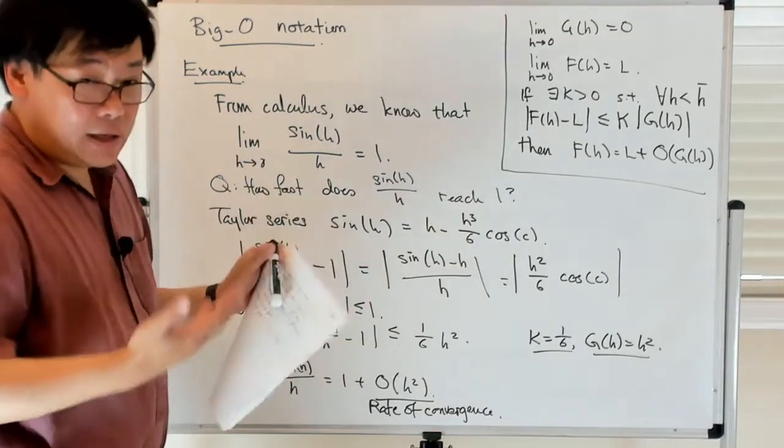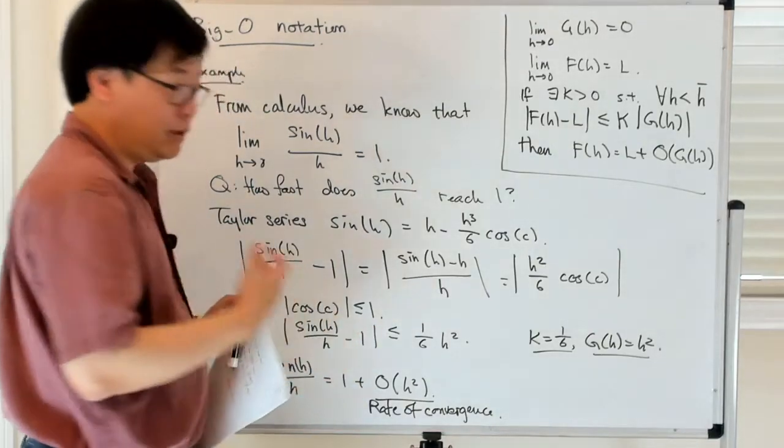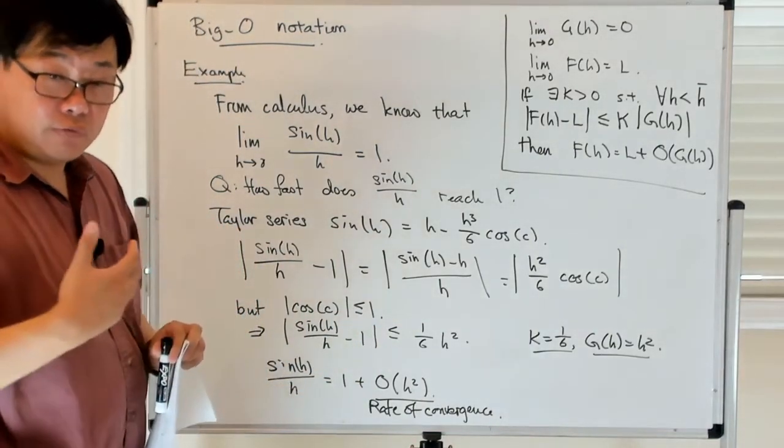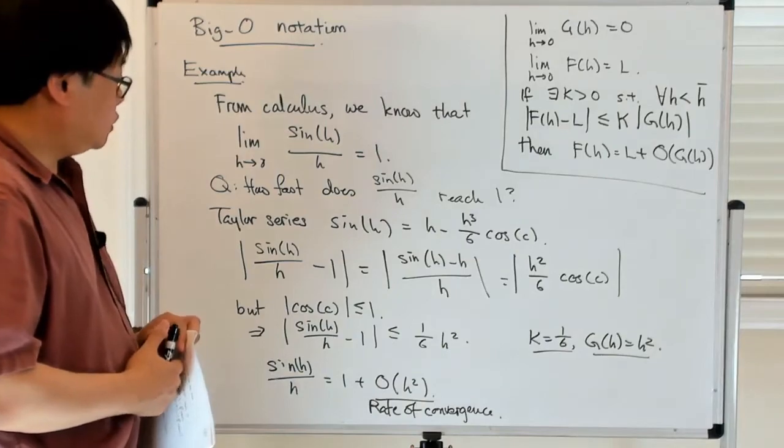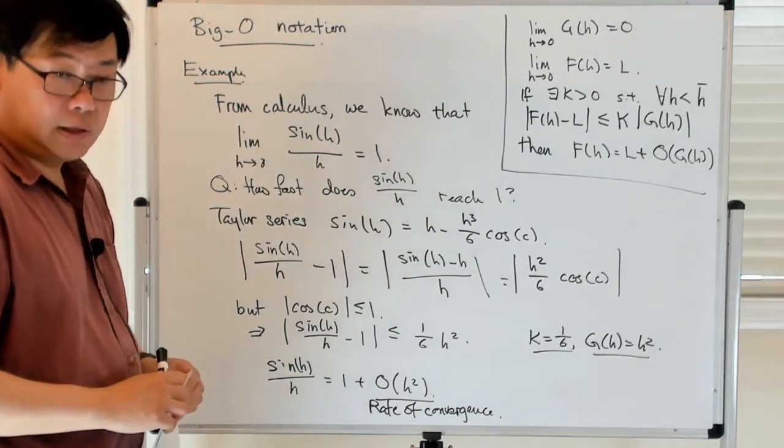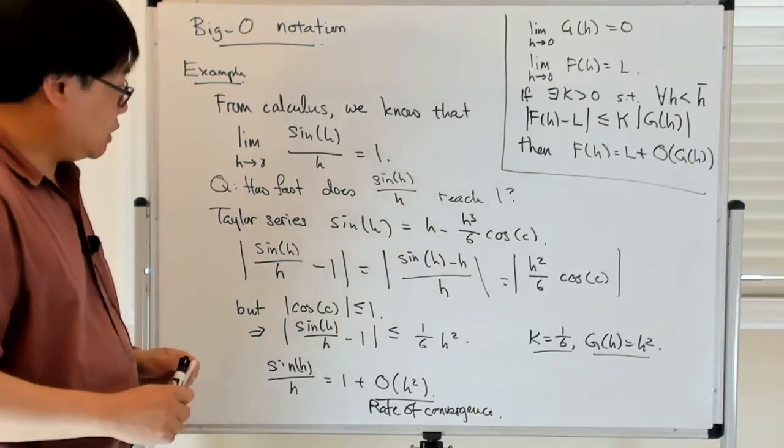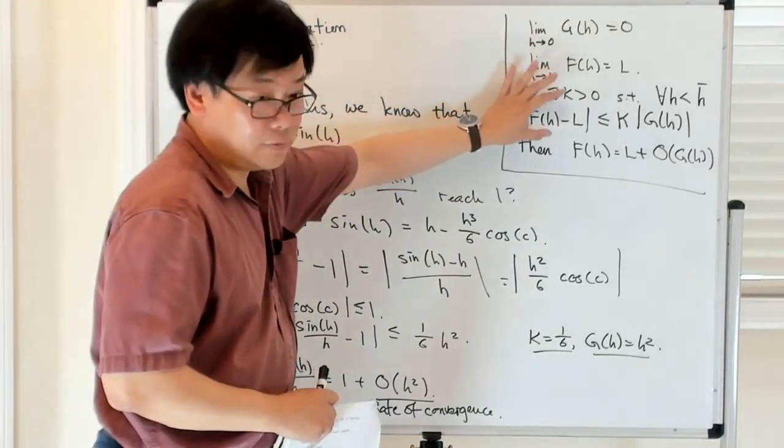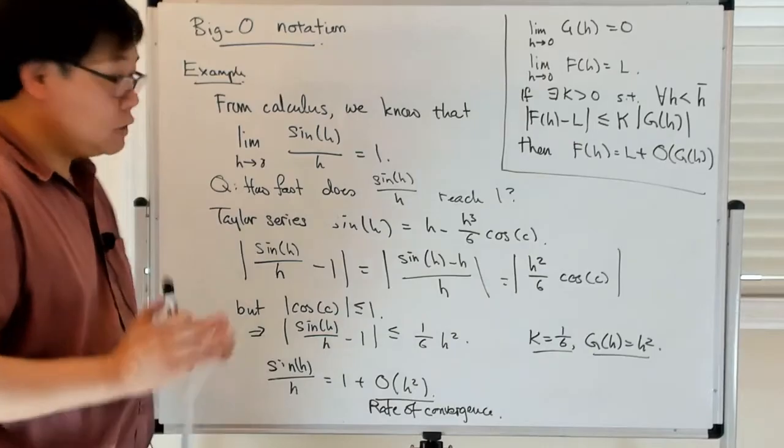But all else being equal, most of the time you would prefer a method which will converge faster. So this is again a concept, this big O notation is a concept which we're going to be using again and again. But that's sort of the formal definition which we have here. So let me just stop here for now.